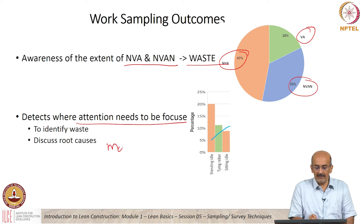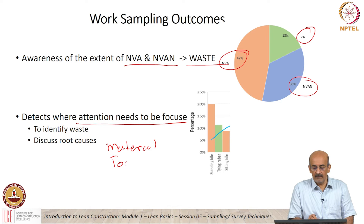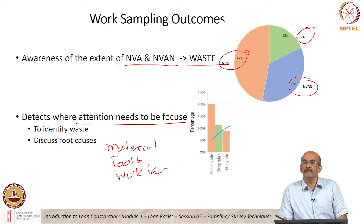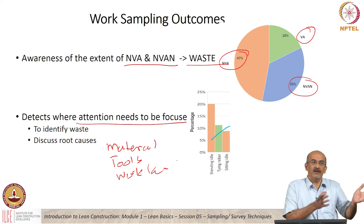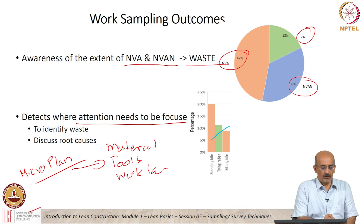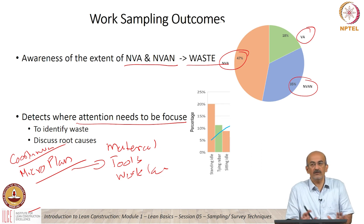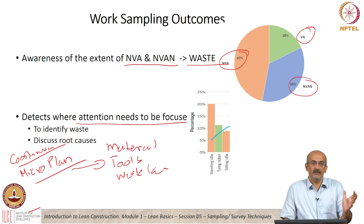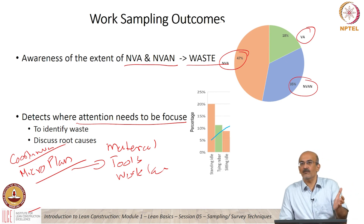Are they standing idle because of materials? There are many things — tools, work face, lack of instructions — many things that contribute towards why somebody might be idle. Unless you address those, and a lot of times this goes back to micro-planning, your micro-plan or coordination. There is no coordination between crews, there is no micro-planning — there are a lot of issues there. When you go to this level, you are at the lean level. You have to have coordination between crews and a proper look-ahead plan.